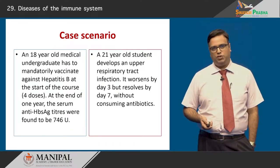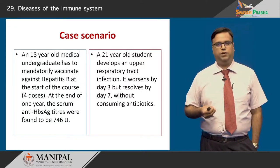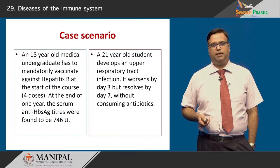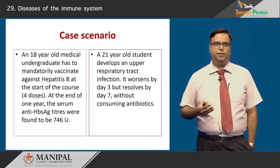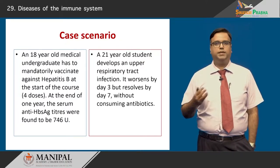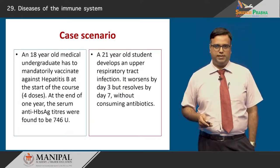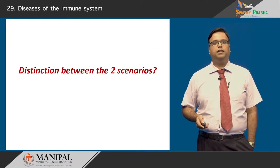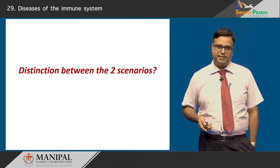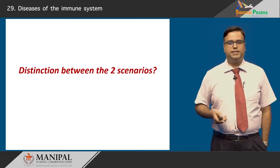There are certain similarities between the two case vignettes: they affect a similar age group, there is an introduction of a foreign substance into the host, and the reactions that took place at the end show a protective response — either recovery from an upper respiratory tract infection or very high protective serum titers. We will try to tackle the distinctions between these two cases and in the process understand the role of lymphocytes and other cells.